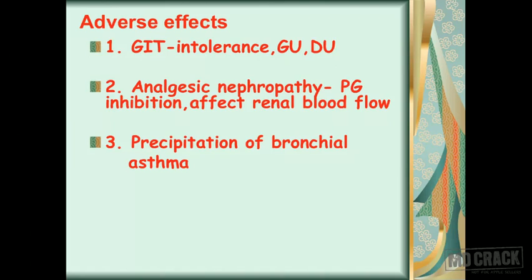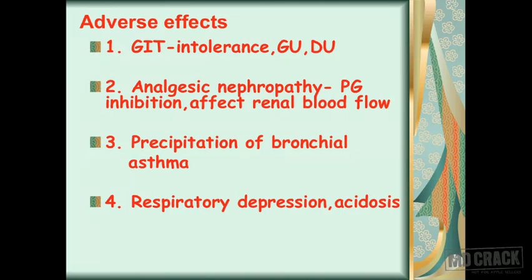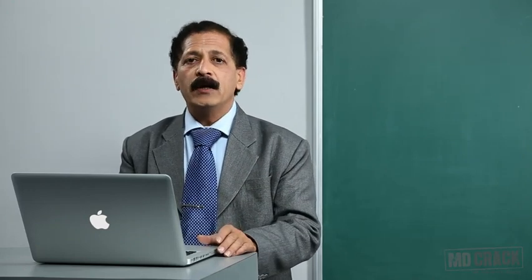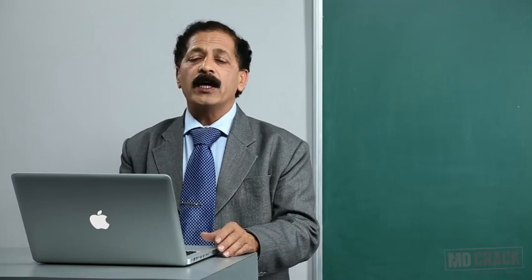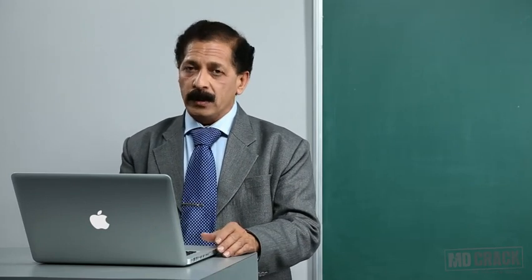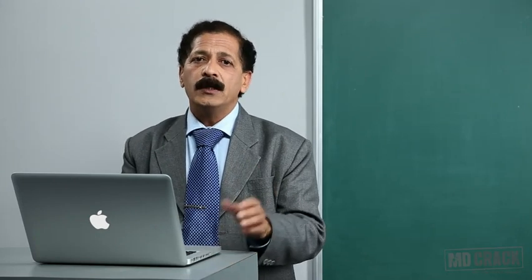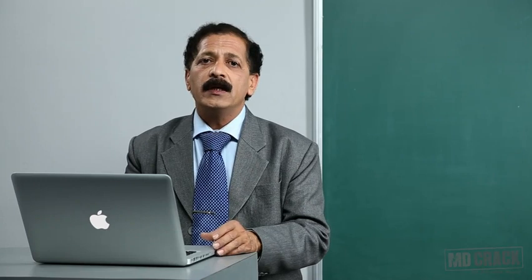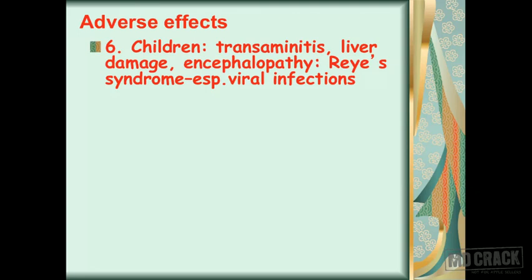You cannot give these drugs to patients suffering from bronchial asthma. Next is respiratory depression and acidosis. Lastly, they can produce hypersensitivity reactions — aspirin is known to produce acute hypersensitivity in the form of Stevens-Johnson syndrome, and delayed hypersensitivity reactions like fixed drug eruptions. When aspirin was used in children in higher or continuous doses, it leads to transaminitis — increased transaminase enzyme levels — and liver damage leading to encephalopathy, called Reye's syndrome.